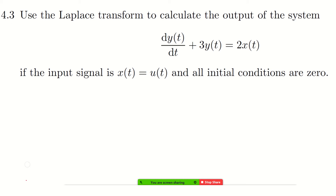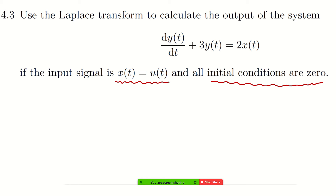Question 4.3. We use the Laplace transform to calculate the output of the system. This is the input-output relationship of the system, where we consider the case where the input signal is u(t) and all initial conditions are zero. When we say initial conditions are zero, that means the value of the signal at t=0 is zero.